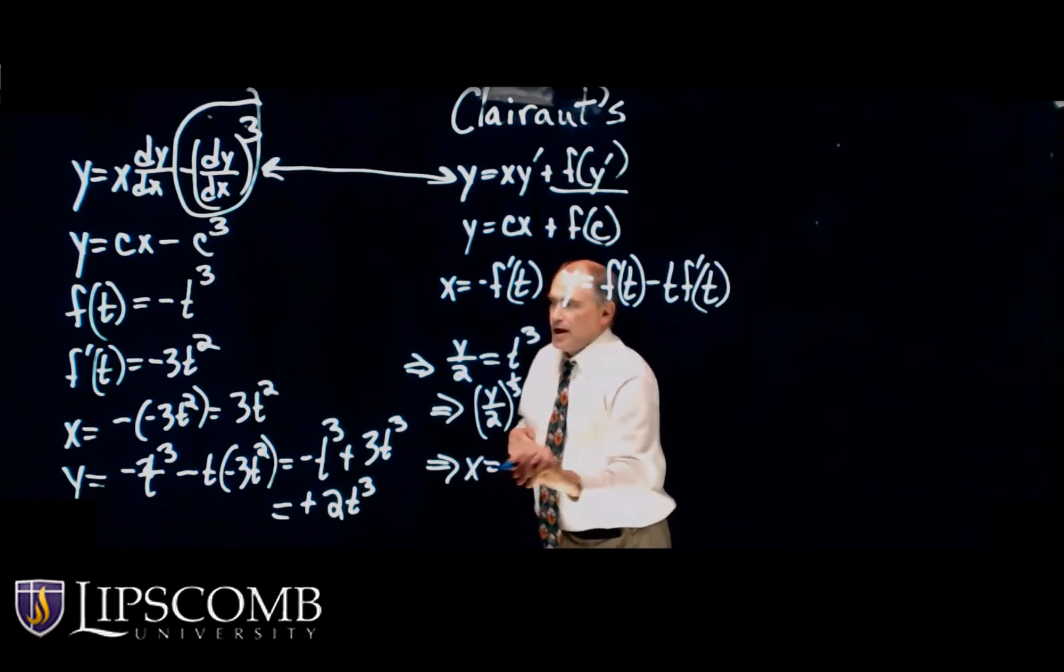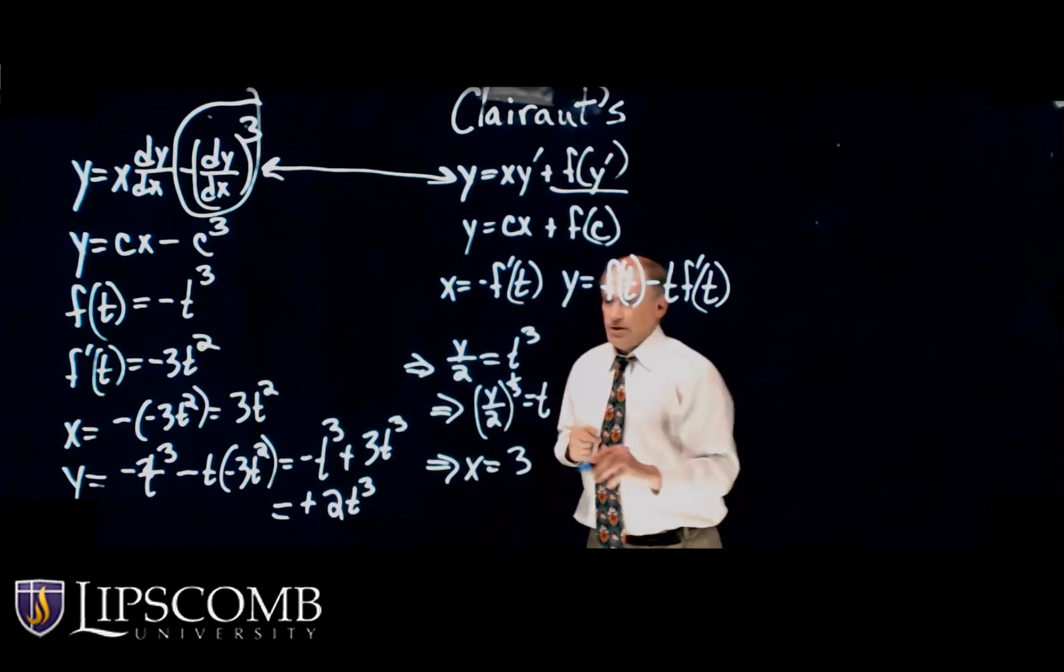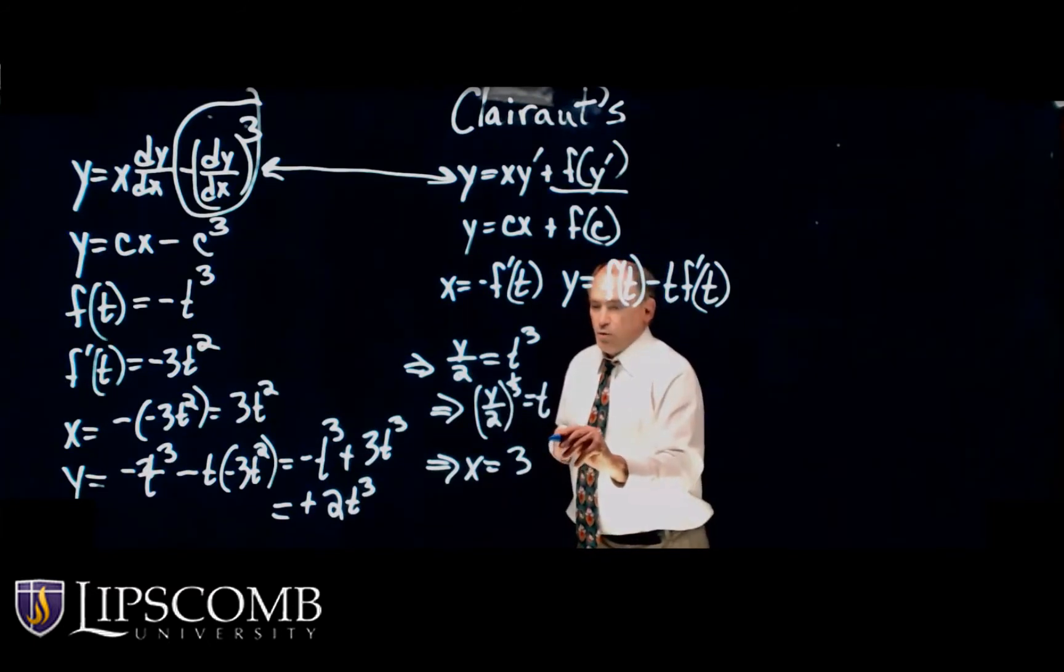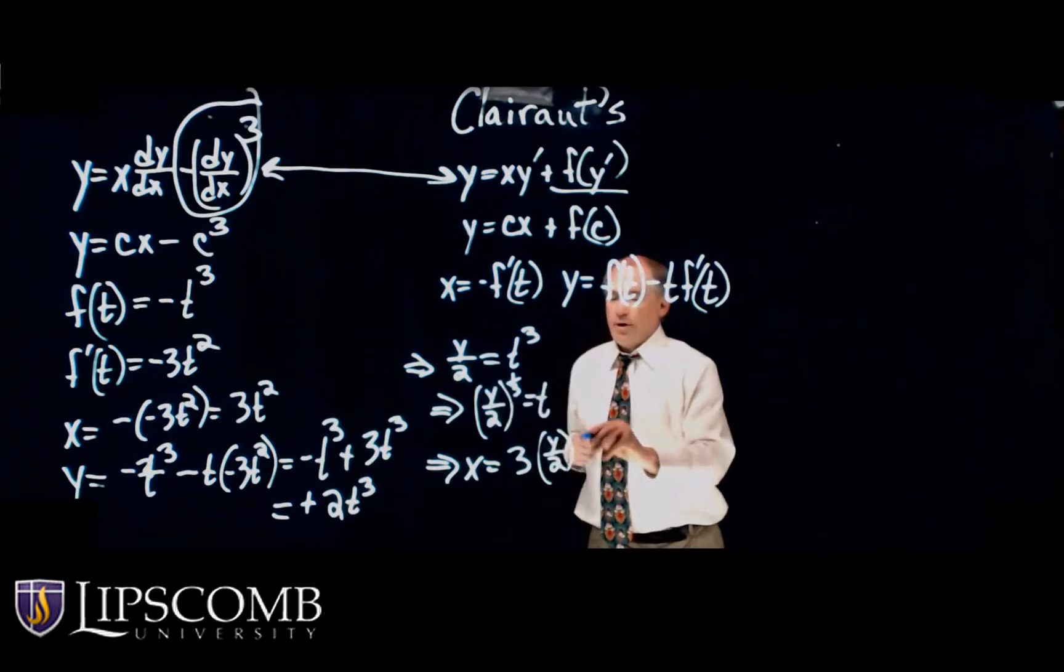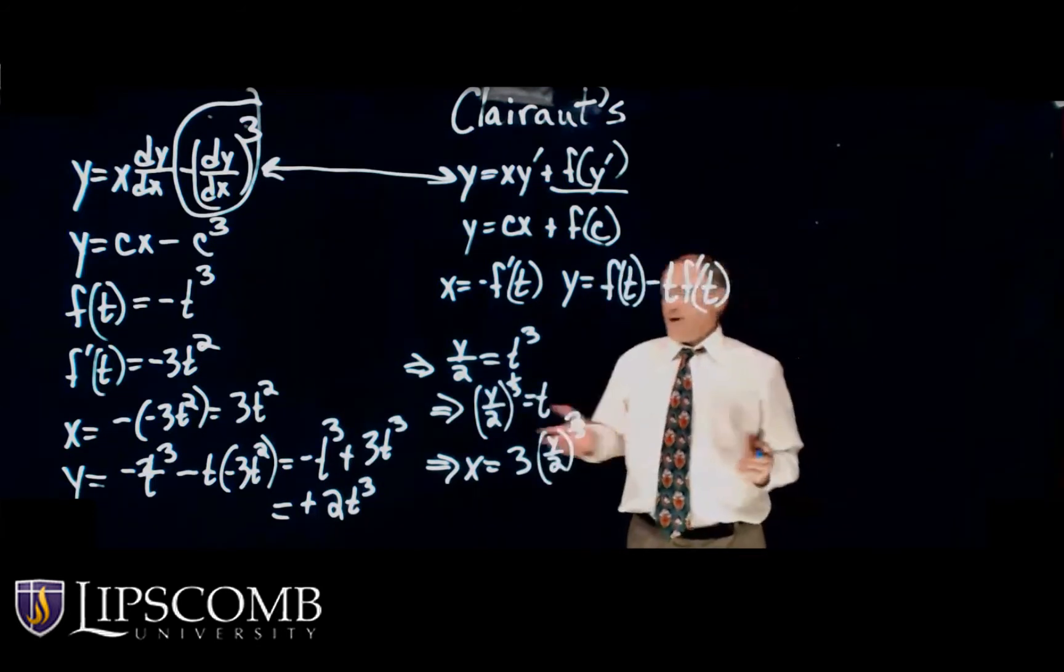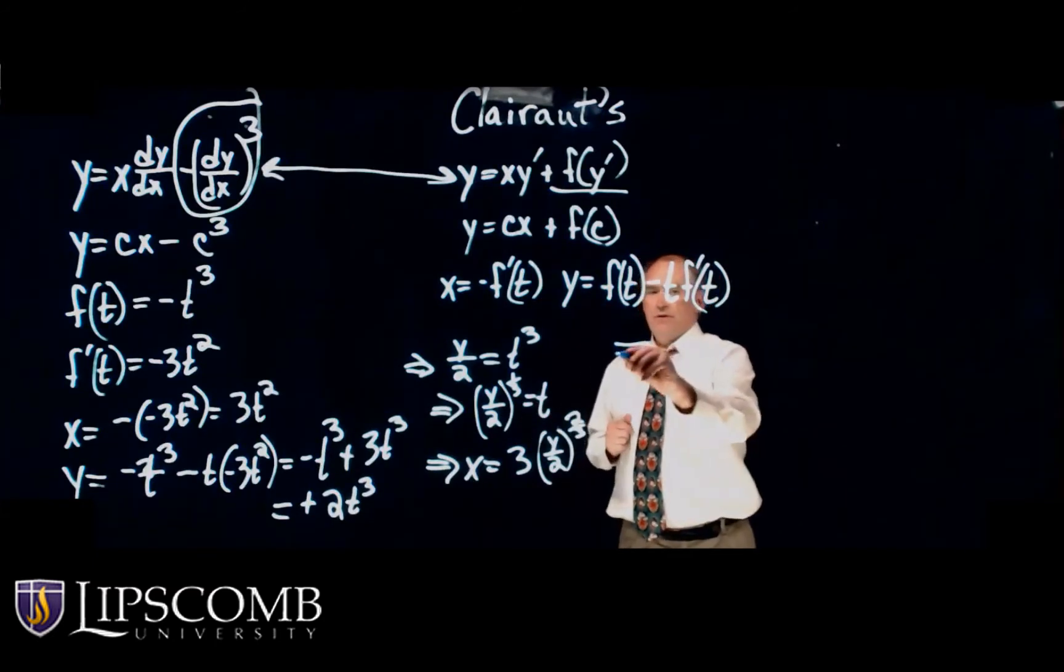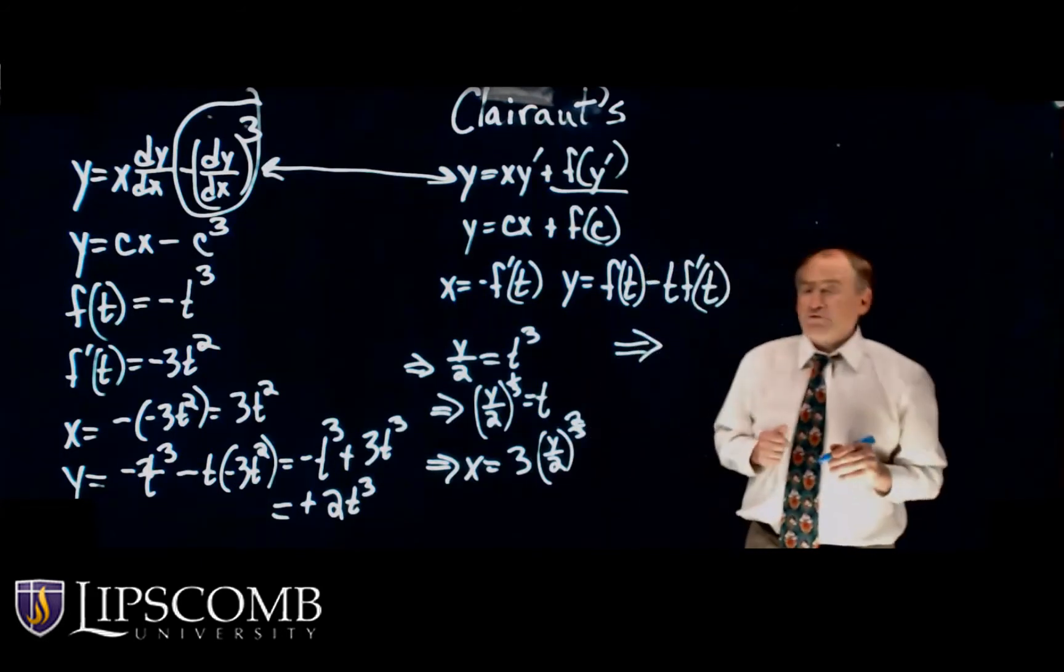So X equals 3 times, this would be Y over 2 to the 1/3 squared. So that would be 2/3. So to make this nice looking, why don't we cube both sides. So if we cube both sides, what do we get?